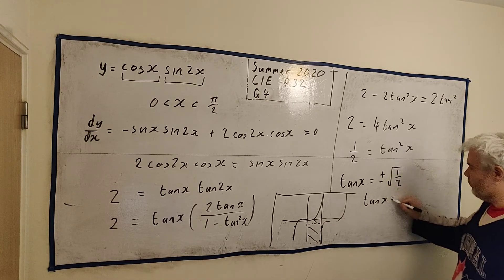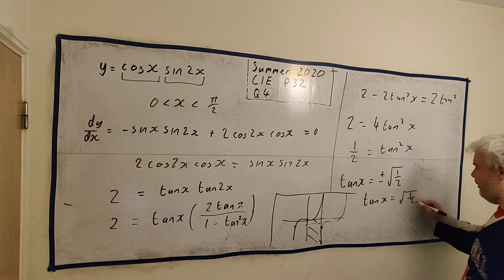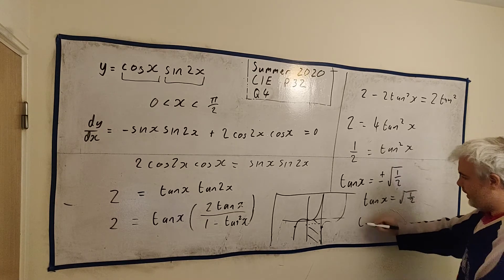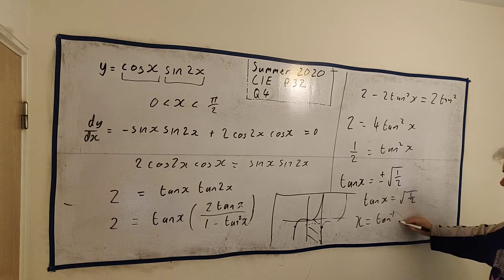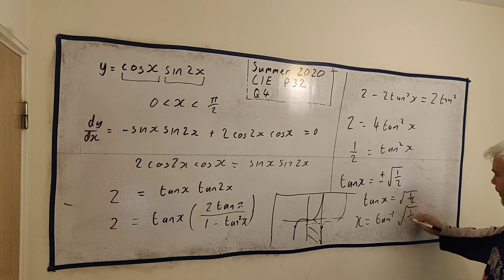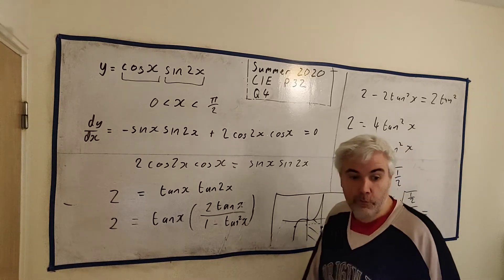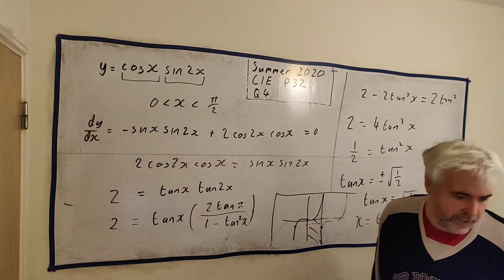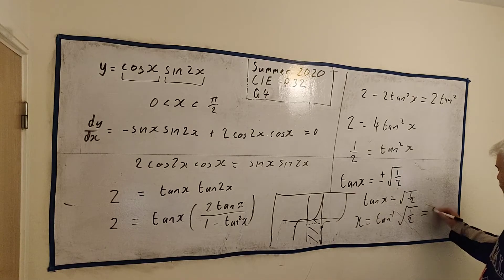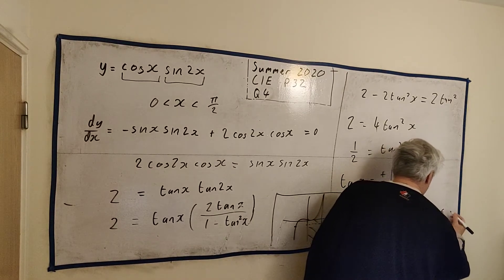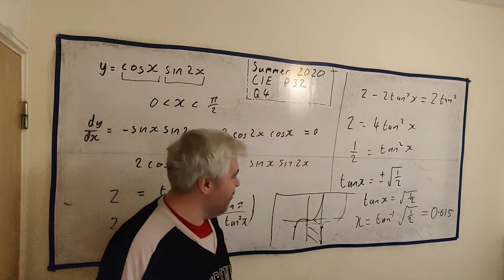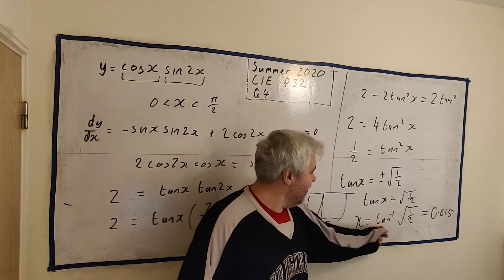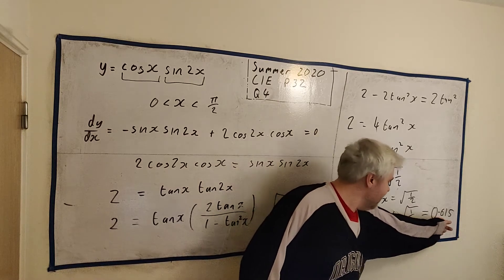Tan x will equal square root of 1 half. So we can get x is equal to the inverse of tangent square root of 1 half. Put that into a calculator and we will find out what x is. It will come out as 0.615. Yes, I believe that's correct. The inverse tangent of square root of 1 half is this.